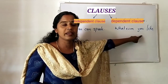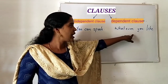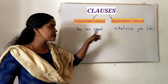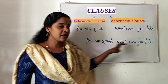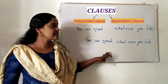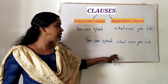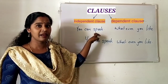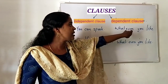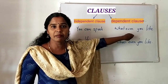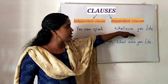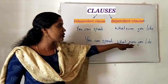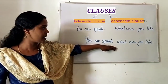'Whatever you like' is a dependent clause, and we can make it complete by adding an independent clause to it. 'You can speak whatever you like' — now this is a complete sentence with complete meaning. The independent clause 'you can speak' already had a complete meaning, while 'whatever you like' does not.